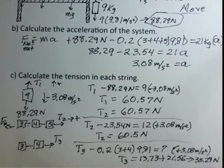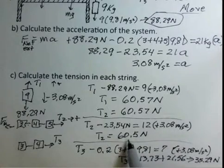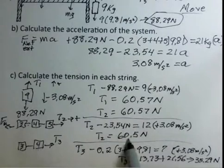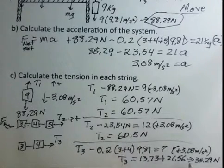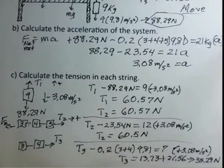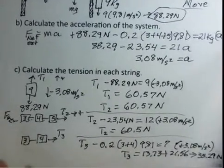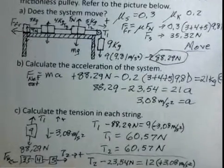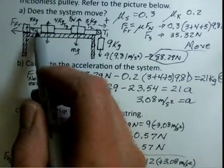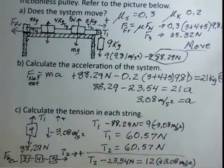Is T3 = 35.29 newtons reasonable? Yes — it's smaller than T2 (60.5 N). T3 only needs to accelerate 7 kilograms, while T2 must accelerate 12 kilograms, so it makes sense that T3 is smaller. Now for the last tension, T4, the string connecting the 3 and 4 kilogram objects.